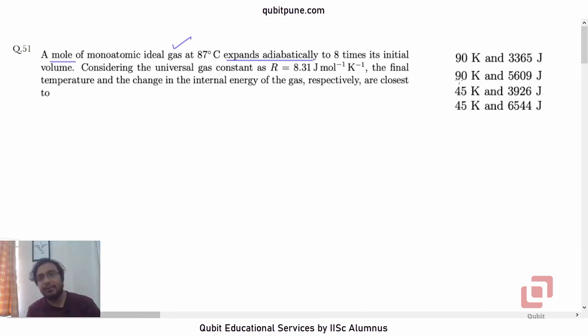For temperature we have two options 90 Kelvin and 45 Kelvin, and for change in internal energy we have four different options. So we have to find both of them. Just finding the temperature won't be enough because that will leave two of the four options.